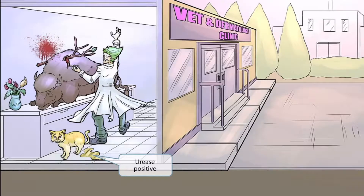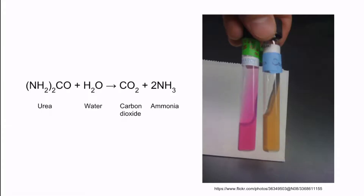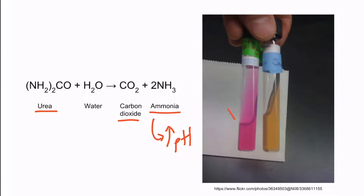The cat is pretty scared because she's seeing how this doctor is treating the bison. In her fear, she couldn't help but urinate on the floor. Urine sounds kind of like urea, and it also contains urea, so we thought this would be a good symbol for urease positive organisms. Urease breaks down urea into carbon dioxide and ammonia. Because ammonia is a basic compound, it will raise the pH of the solution. In the urease test, there is a pH-sensitive substance in the test tube that becomes pink when the pH increases. Therefore, if the organism is urease positive and urea is added, the solution should turn pink. The pink color in this test tube indicates that the organism is urease positive.